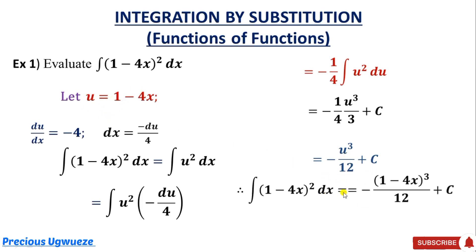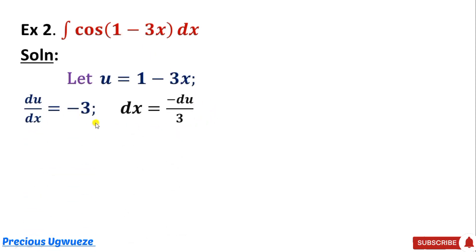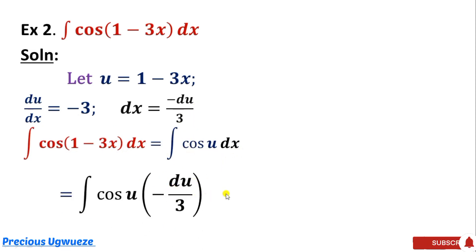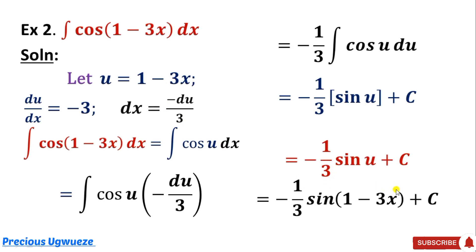Finally, we substitute back the value of u, giving us the final solution. For the next example, we evaluate the integral of cos(1 minus 3x) with respect to x. We substitute the inner function, take the derivative to get minus 3, make x the subject, then substitute: 1 minus 3x becomes cos u, dx becomes minus du over 3. Bringing out minus 1 over 3 and integrating cos u gives sin u, so the result is minus 1 over 3 sin(1 minus 3x) plus c.